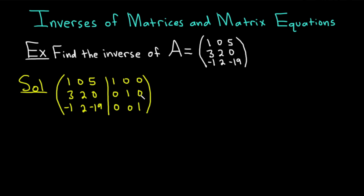Since the number on the top left is already a 1, we don't need to do anything. So instead we're going to make the numbers below it zeros. To make the 3 a 0, we'll do negative 3 times row 1 plus row 2. We need to make the negative 1 a 0 on the bottom, so we just add row 1 to row 3 to make that happen.